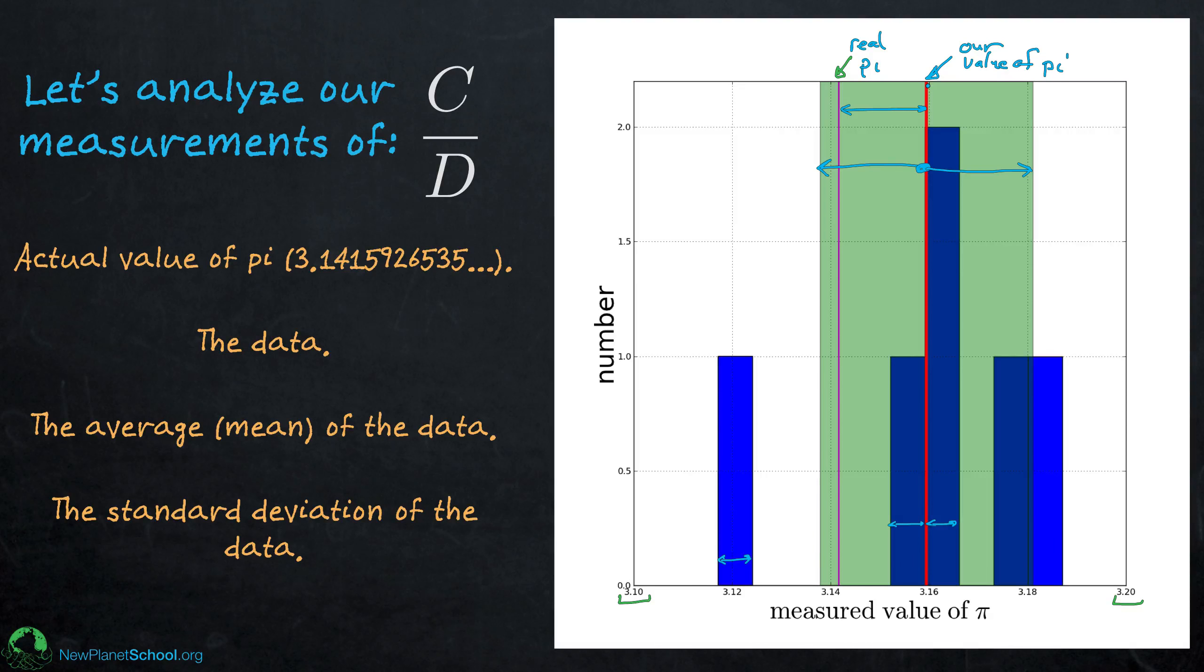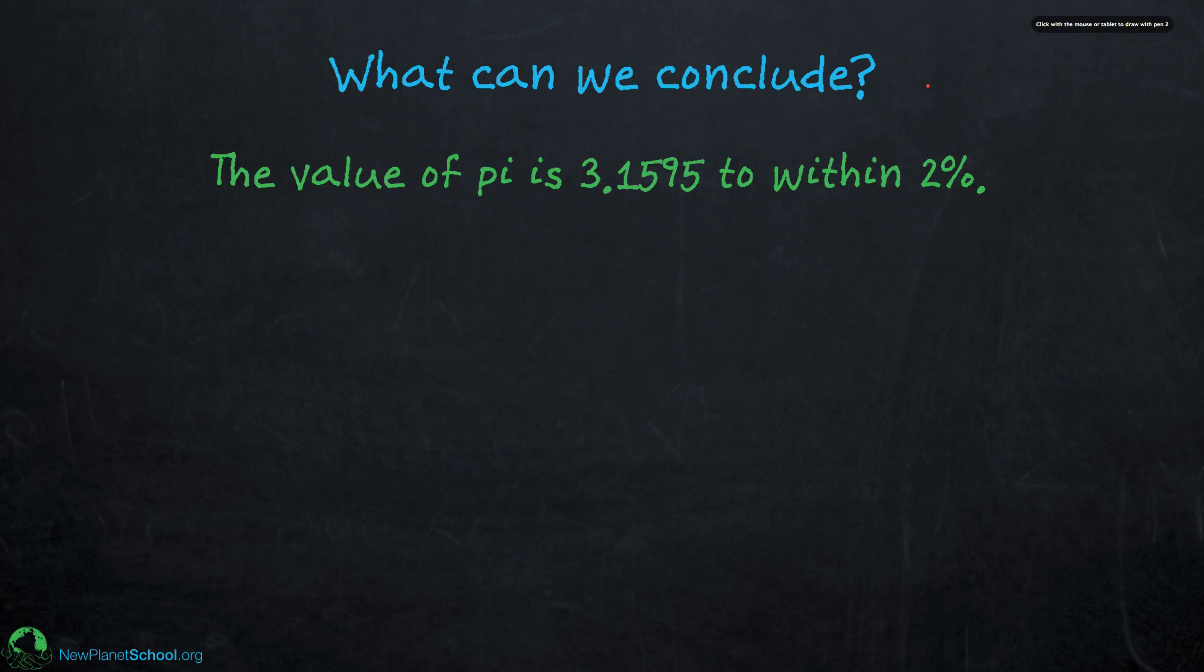So it's important when you make these kinds of measurements to think about what exactly can you actually say. So let's think about that. If all of the measurements can be treated as independent measurements of pi, the only thing that we can conclude is that the value of pi is 3.1595, that was our average, to within a standard deviation of 2%, which is not bad. But given that we made these six measurements, that's about all we can say.